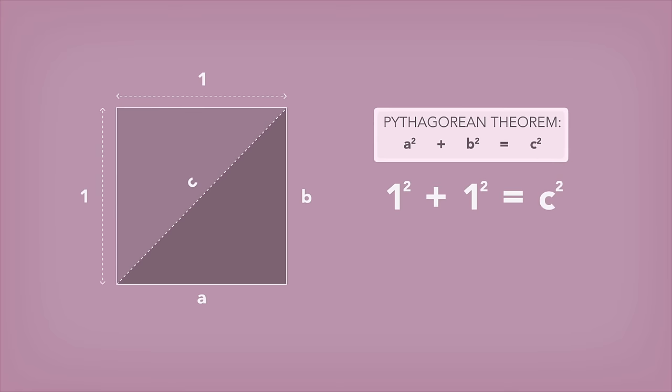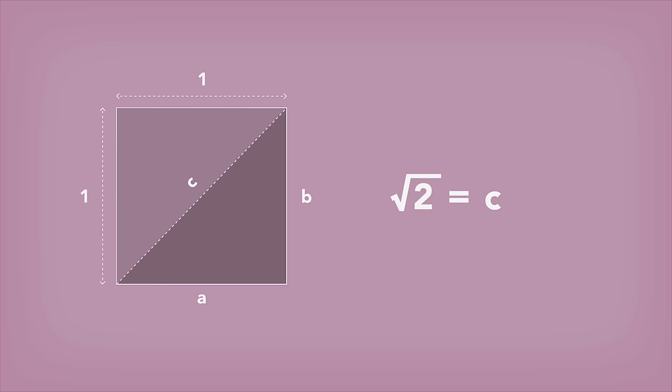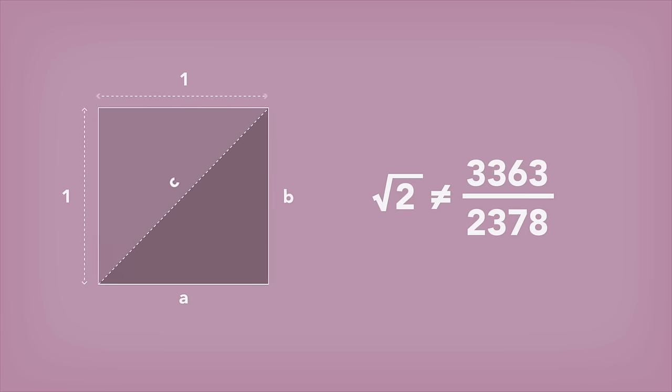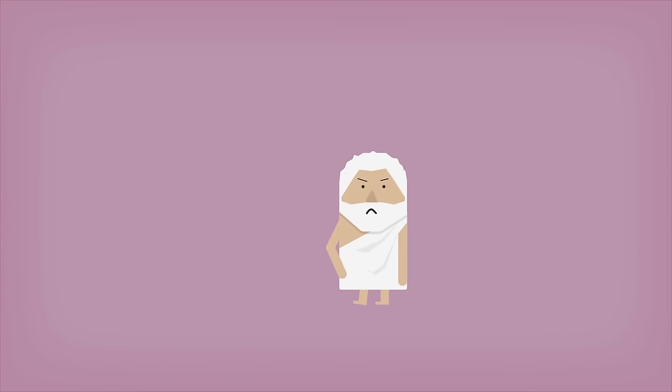According to Pythagoras' theorem, the diagonal length would be square root of 2. But try as he might, Hippasus could not express this as a ratio of two integers. And instead of giving up, he decided to prove it couldn't be done.